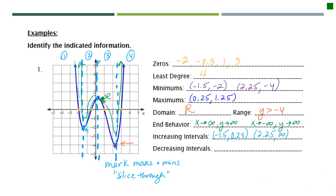For the decreasing intervals, sections two and four were increasing, so the other two must be decreasing. Interval one goes from negative infinity to negative 1.5. The boundary numbers on the dotted lines should show up in all of your intervals. The last decreasing section, interval three, starts at 0.25 and stops at 2.25.